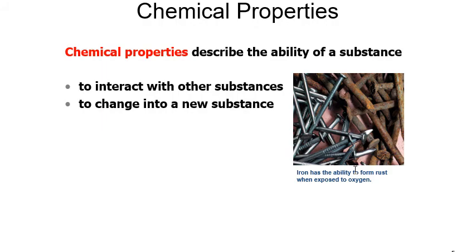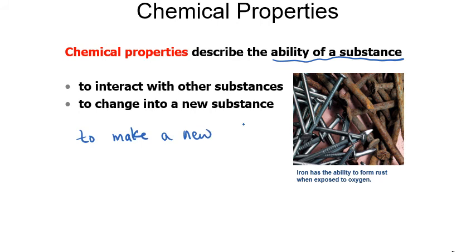Now let me talk about chemical properties from another point of view. For physical properties we have a very clear and straight definition, but for chemical properties we need to remember that we are going to describe the ability of a substance to make a new substance — to interact with other substances. So we can write here: ability of a substance to make a new substance.